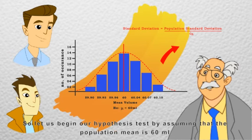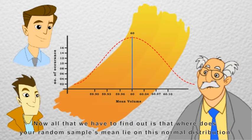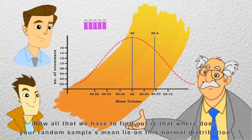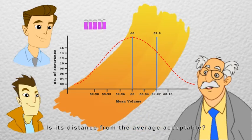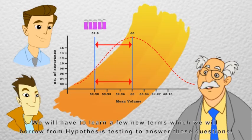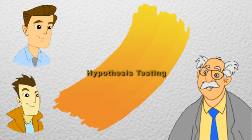Let us begin our hypothesis test by assuming that the population mean is 60 ml. Now all that we have to find out is where does your random sample's mean lie on this normal distribution? Is its distance from the average acceptable or is it very less? We will have to learn a few new terms which we will borrow from hypothesis testing to answer these questions.